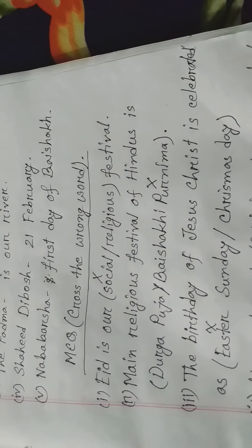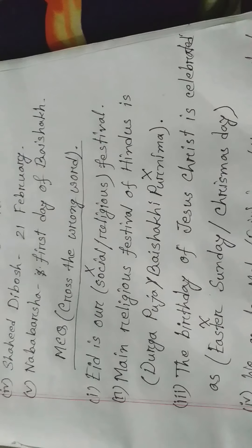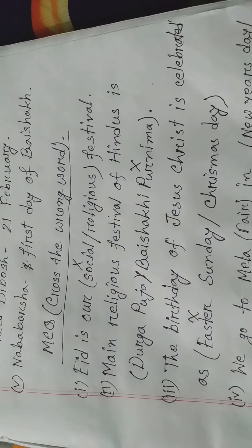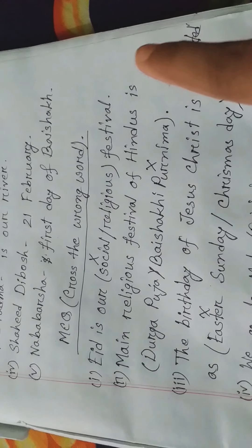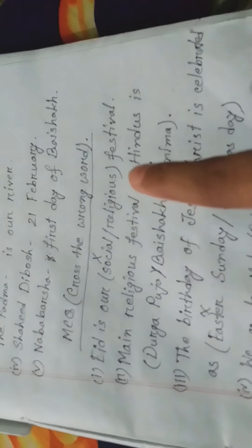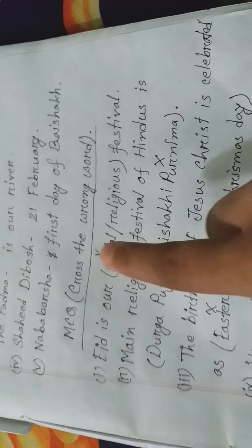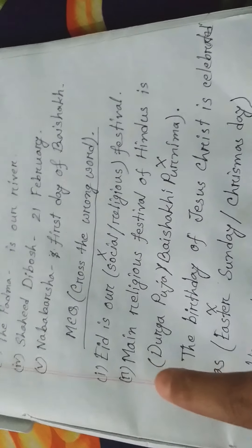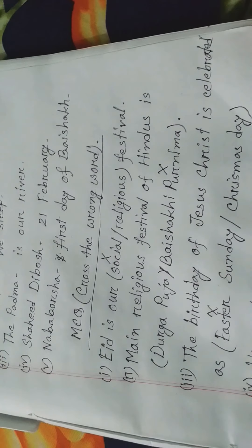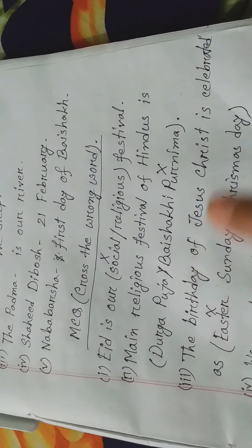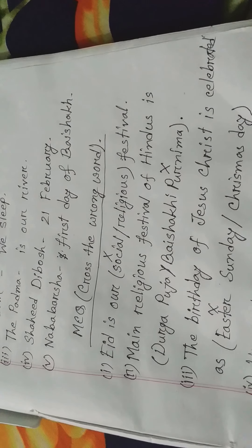In the MCQ section you will have to cross only the wrong answer. First: Eid is our social or religious festival? The wrong answer is social, so you will cross social. Second: the main religious festival of Hindus is Durga Puja or Boishakhi Purnima? The wrong answer is Boishakhi Purnima.